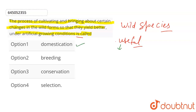Domestication — the definition is: raising wild species under artificial growing conditions is called Domestication. Option B, Breeding, involves cross-breeding — it is not the right fit here, as breeding refers to changes made useful to humans. Option C, Conservation, means to preserve or conserve. Option D, Selection, means to select.